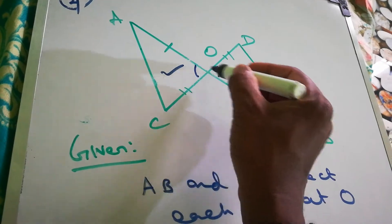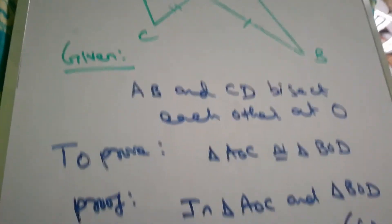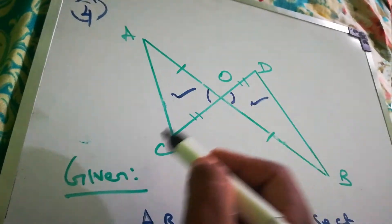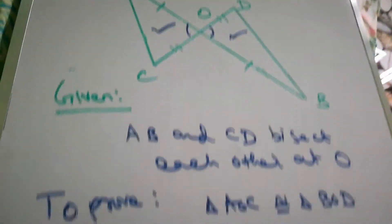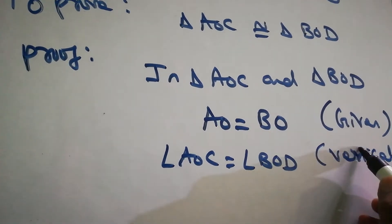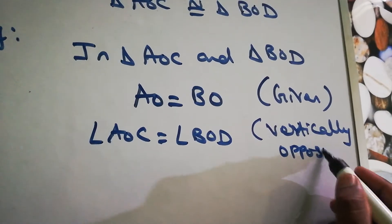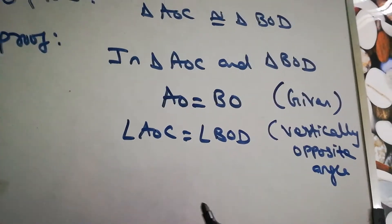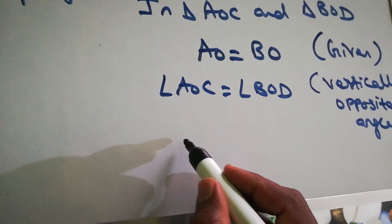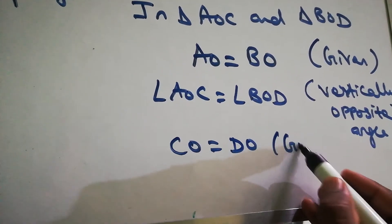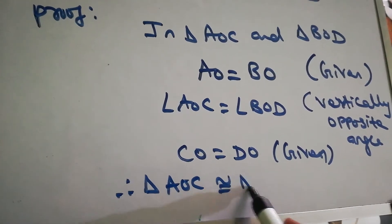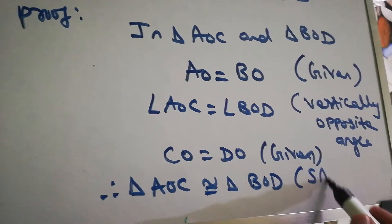Angle AOC equals angle BOD because they are vertically opposite angles. The third condition: CO equals DO is also given. So all three parts are equal, and we can say triangle AOC is congruent to triangle BOD by side-angle-side congruence.